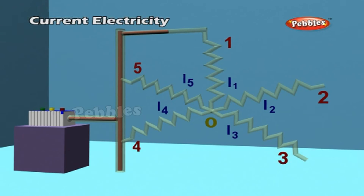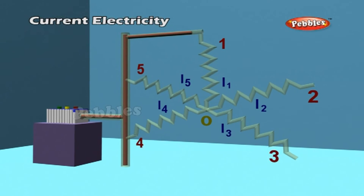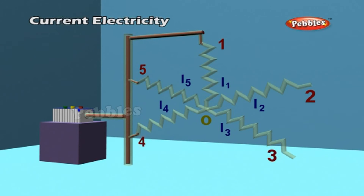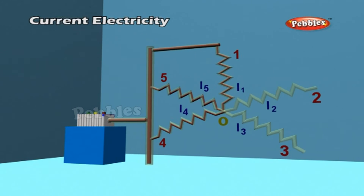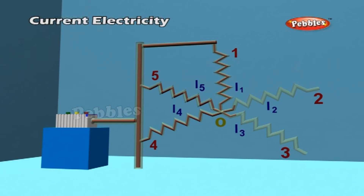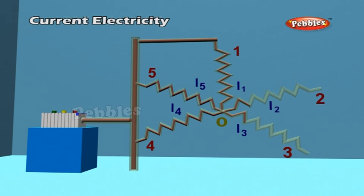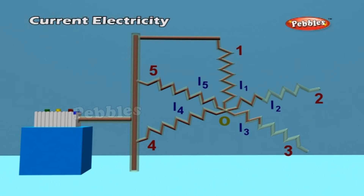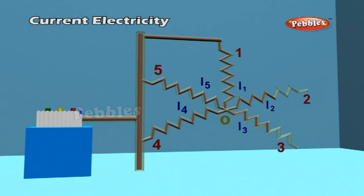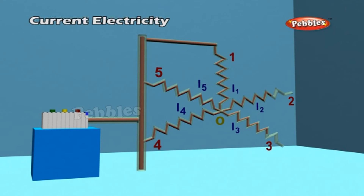Kirchhoff's First Law states that the sum of the currents flowing into a junction is equal to the sum of the currents flowing out of the junction. That is, I1 + I2 + I4 = I3 + I5. This law is a consequence of the law of conservation of charge. It may also be stated as: the algebraic sum of electric currents at a junction in a circuit is zero, i.e., I1 + I2 − I3 + I4 − I5 = 0.